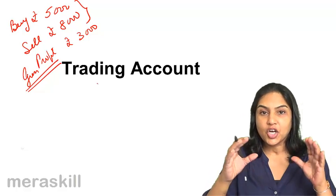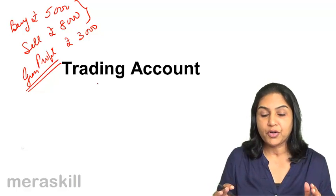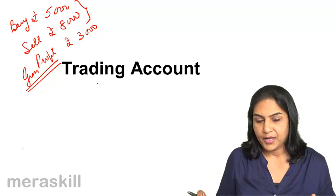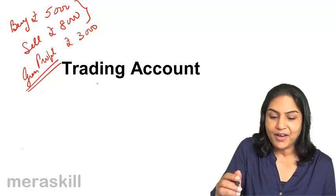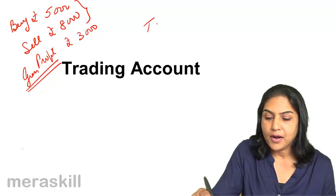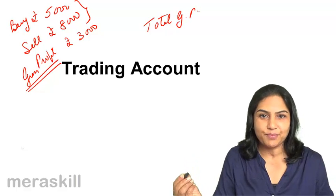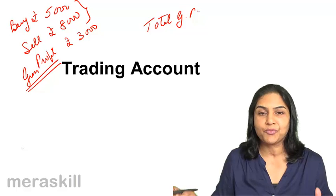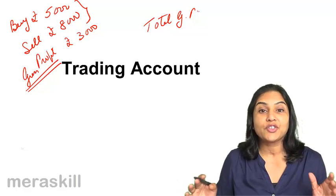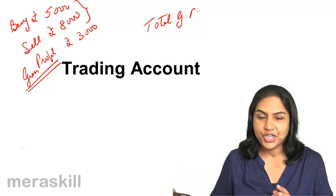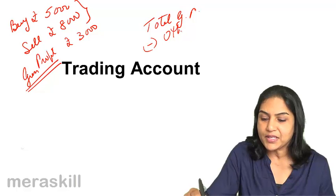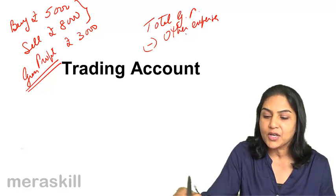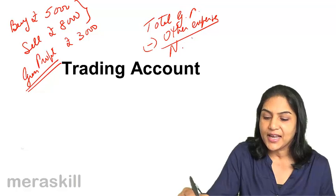This profit is nothing but the gross profit which is revealed by the trading account. Having made a gross profit of 3,000 rupees per phone, depending on the number of phones we sell, we have a total gross profit from which we meet our other expenses — rent of the shop, lighting, telephone charges, sales boys, cashier, etc.